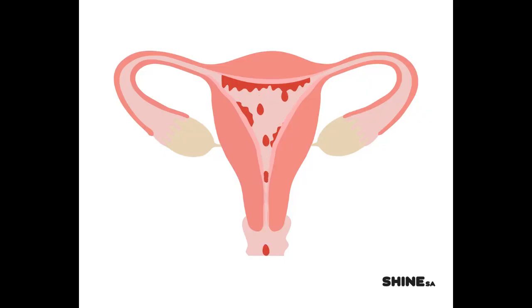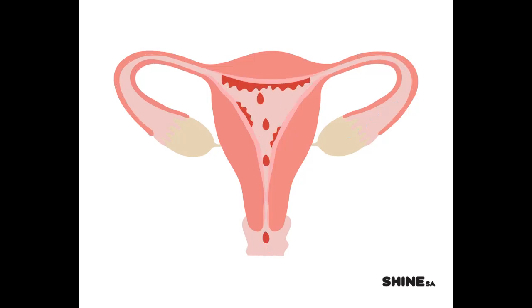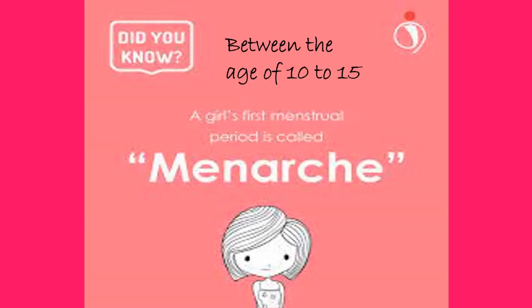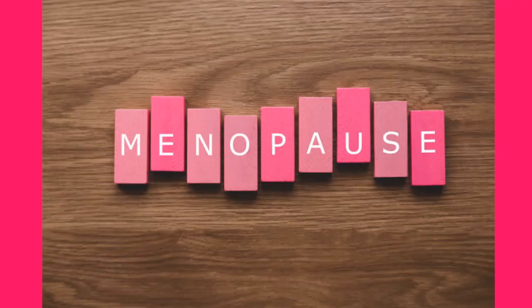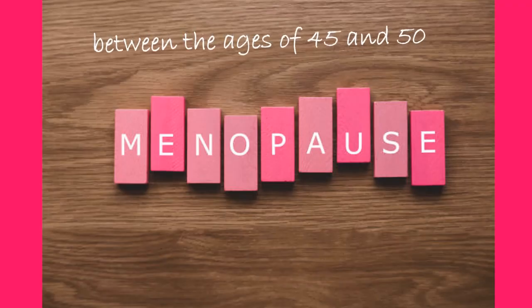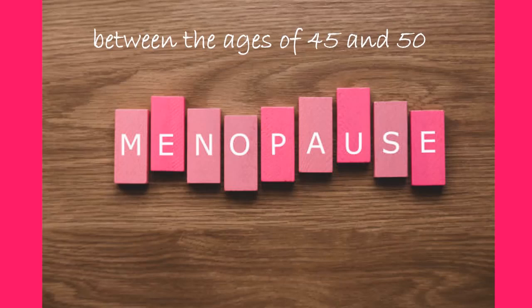If fertilization does not take place, the uterus sheds its inner lining, resulting in bleeding known as menstruation. Menstruation typically begins between the ages of 10 and 15, marking the onset of puberty, a phase known as menarche. It continues throughout a woman's reproductive years and eventually ceases between the ages of 45 and 50, a phase known as menopause.